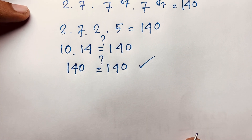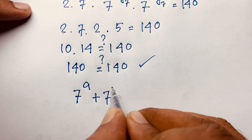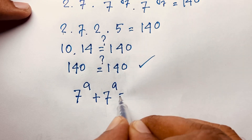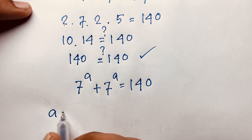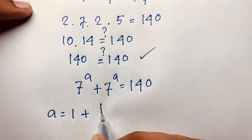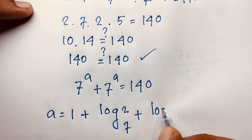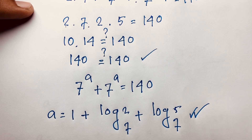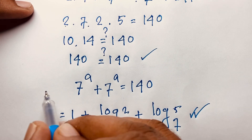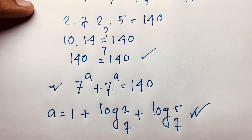So our final answer: 7 to the power a plus 7 to the power a is equal to 140, and a is equal to 1 plus log base 7 of 2, plus log base 7 of 5. This is the value of a in this Math Olympiad question. Thank you all — if you enjoyed this video, please subscribe to my channel for other interesting videos. Goodbye, take care.